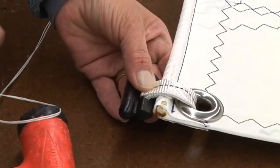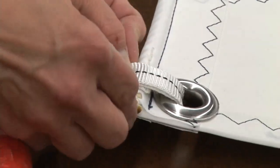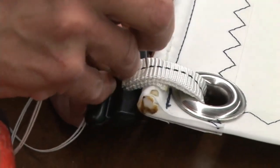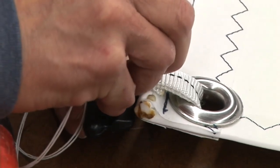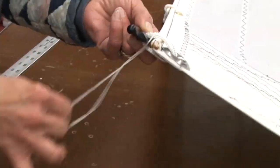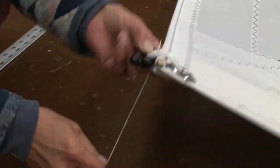The process for installing this coated outhaul slug as far as whipping around the webbing is exactly the same as the all-slip slugs that we installed at each of the reef points. If you didn't see that, you may want to go watch that portion of the video.